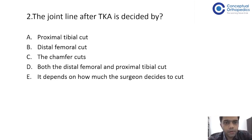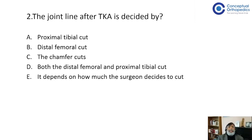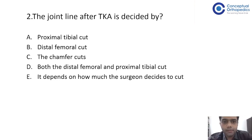I would like to replace the amount of cut with the implant thickness. So if the implant thickness is 9mm, I would like to take off 9mm from the normal, unaffected side. Do you think there's a lot of variability in the distal thickness of the implants available? Universally, I feel most implants have a 9mm thickness of the distal portion.